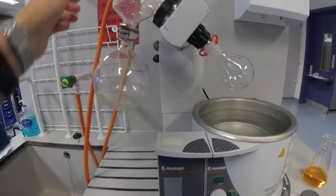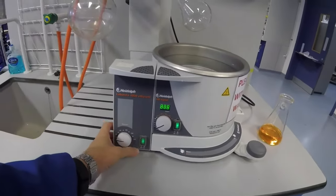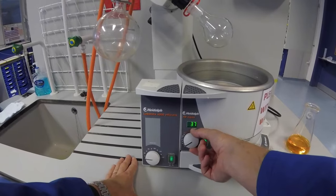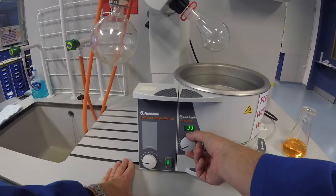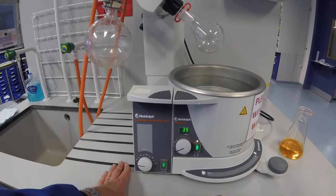So in order to set it up, first thing we're going to do is make sure we switch it on and here we can then set the temperature. Essentially for most organic solvents we're going to want 40 degrees will do very nicely.